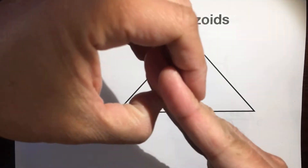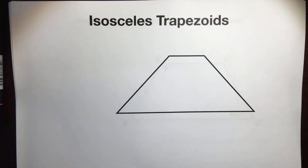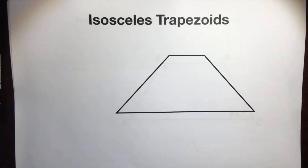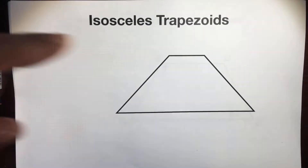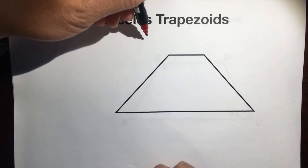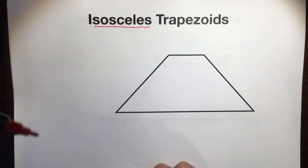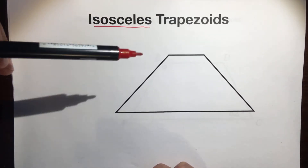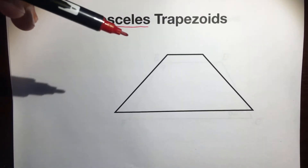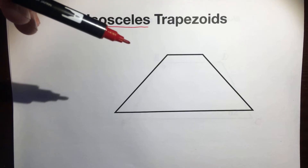Hello, this is Mr. Kenyanola, and I'm going to teach you right now about isosceles trapezoids. What does the word isosceles mean? You've seen this word before — you've seen it in isosceles triangles. Isosceles just means two sides are congruent.